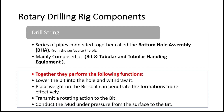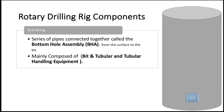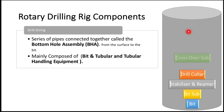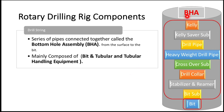The functions of the drill string are: to lower the bit into the hole, place weight on the bit so it can penetrate formations effectively, transmit rotation to the bit from the rotary table or top drive, and conduct mud under pressure from the surface to the bit. The drill string consists of drill collar, drill pipe, and the kelly, along with various other pieces of equipment such as stabilizers and reamers included just above the drill bit. All of these components will be described in detail in the drilling manuals.